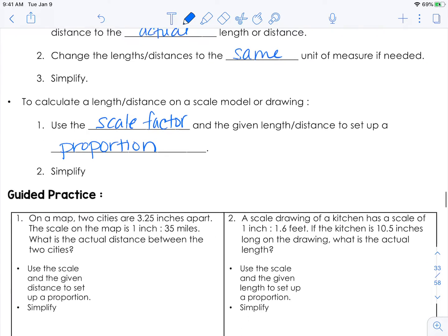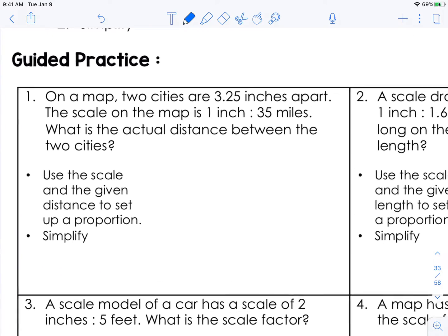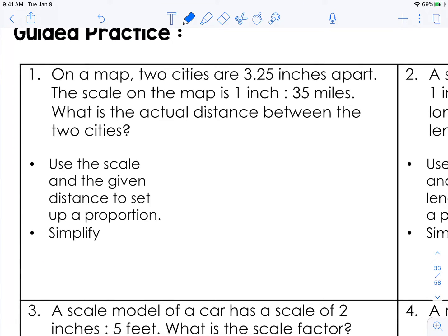So let's look at this. It's easy to go through definitions and talk it out, but to actually see this get used it will really help you better understand it. So on a map two cities are three and a quarter inches apart. The scale on the map is one inch equals 35 miles. So that means if you take a ruler to this map every single inch equals 35 miles in real life. So what is the actual distance between the two cities? So we know that they are 3.25 inches apart. And we also know what the scale is. So you need to use the scale and the given distance to set up a proportion.